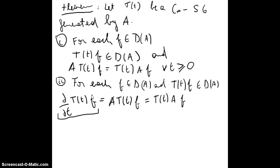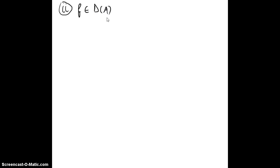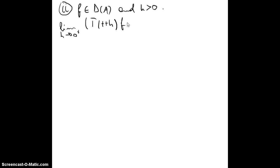The second thing we want to see is that for each f in the domain of A, with T(t)f in the domain of A, d/dt of T(t)f equals A·T(t)f, and this equals T(t)·Af. For the second part, we have f in the domain of A and h greater than 0. We consider the right-hand limit: the limit when h goes to 0 plus of T(t+h)f minus T(t)f, over h.